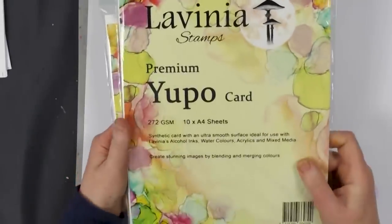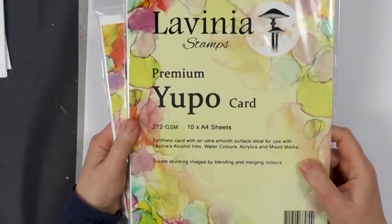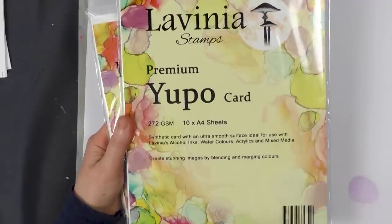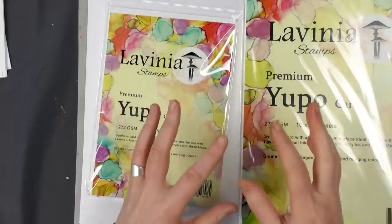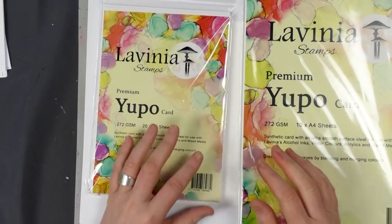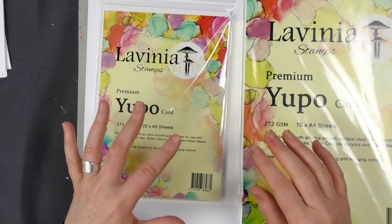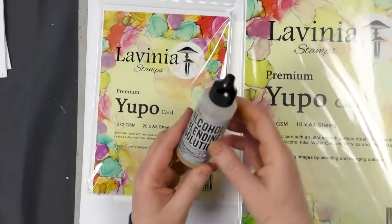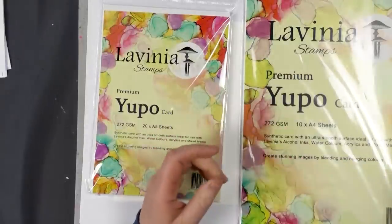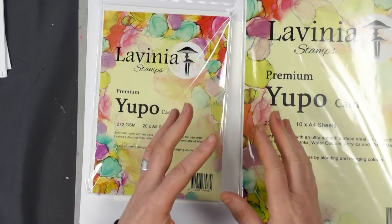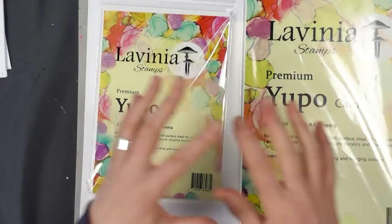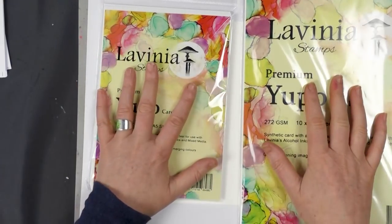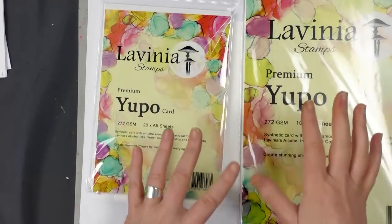Now this is our premium Yuppo card. Yuppo is a synthetic card, it's got a really smooth surface and it just means that the alcohol inks that we're using don't soak straight into the card. It gives you time to move the ink around using our blending solution. Because it's alcohol based at some point the alcohol will absorb and the image will actually set into the card.